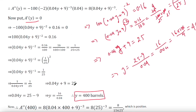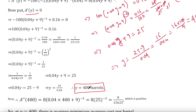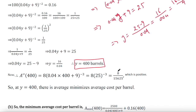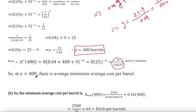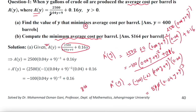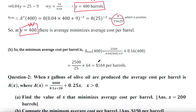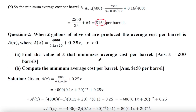We don't yet know whether y = 400 is a minimum of the average cost function. To check, we put y = 400 into the second derivative and obtain a positive value, which indicates there is a minimum average cost per barrel at y = 400 barrels. To find the minimum average cost, substitute 400 into the given function: 2500 divided by (0.04 × 400 + 9) plus 0.16 × 400, which equals $164 per barrel.